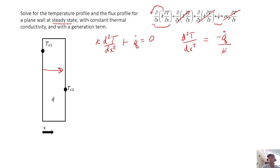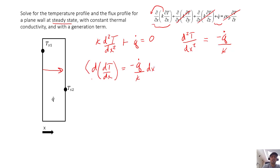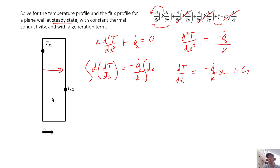Let's go ahead and separate and integrate. Multiplying both sides by dx, we get the derivative of the first derivative of temperature with respect to x equals minus q-dot over k times dx. Integrating both sides, we get dT/dx equals minus q-dot over k times x plus a constant of integration. It's helpful to consider boundary conditions at this point — if we had a flux boundary condition, it would be easier to apply here in dT/dx form.